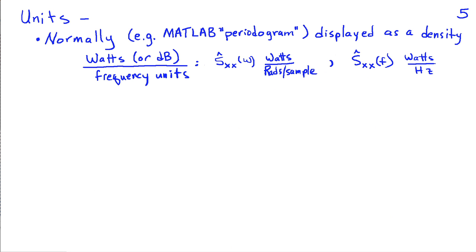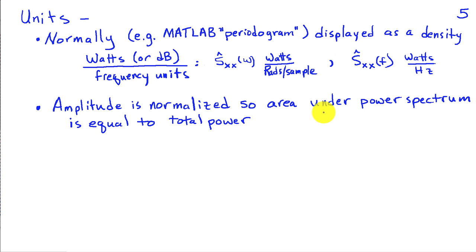Before we conclude, we'll talk a little about units. Referring to the standard that MATLAB uses in its periodogram function, the power spectrum is displayed as a density. The units would be watts, or dB if converted to a decibel scale, divided by the frequency units being used. If displaying the power spectrum in terms of discrete time frequency omega, the units are watts divided by radians per sample. If displaying it as a function of continuous time frequency f, the units would be watts per hertz. Furthermore, the amplitude of the power spectrum estimate is normalized so that the area under the curve equals the total power in the signal.